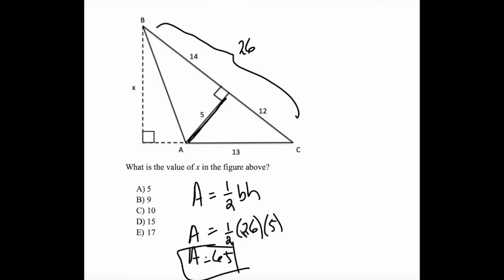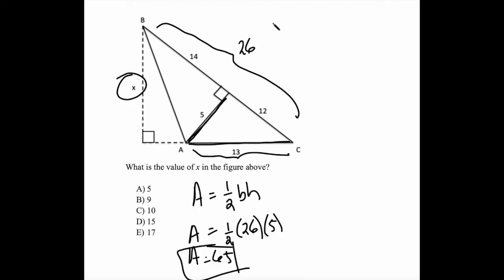What does that have to do with anything? Instead of using BC as a base, what if we used AC as a base? If AC is the base of triangle ABC, then what's the height? Well, the height is x. So we can do this exact same calculation knowing the area, using AC as the base and x as the height. Area equals one-half base times height. I know the area is 65, so 65 equals one-half times the base, 13, times the height, x. When I multiply this out, I find that x equals 10.